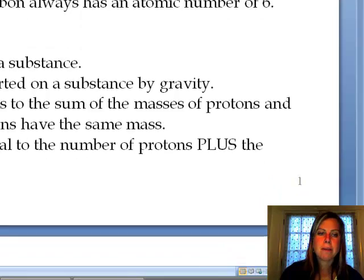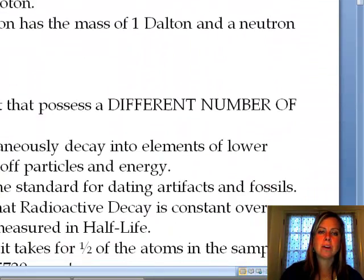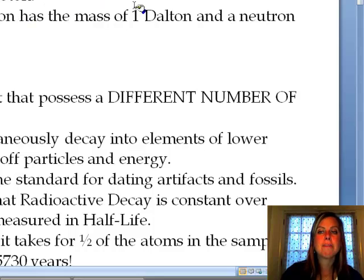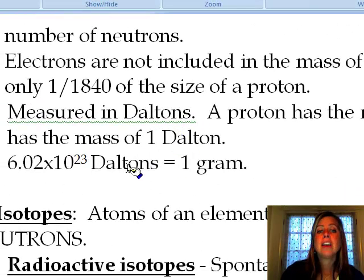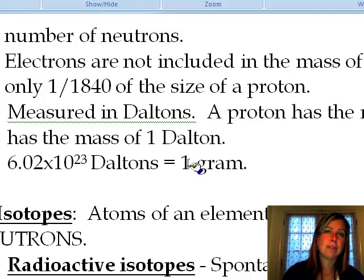Now, another thing that's important about atomic mass is that it is going to be measured in what are called Daltons. So a proton is going to have the mass of one Dalton, and a neutron is going to have a mass of a Dalton. However, electrons are super small. If you look at this, their mass is 1/840th the size of a proton. So they're super tiny. And to give you an idea of how big a Dalton is, you remember in your lab about the metric system, you probably weighed a paper clip to figure out that that was a couple of grams. One gram has 6.02 times 10 to the 23rd Daltons in it, which is a lot. So you can imagine how teeny, teeny, tiny these things are.